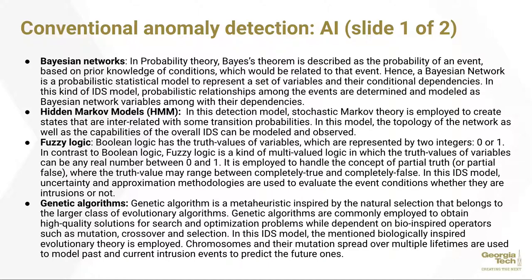Fuzzy logic is employed to handle the concept of partial truth or partial falsity, where the truth value may range between completely true and completely false. This helps with uncertainty and approximation to evaluate event conditions as either intrusions or not. Genetic algorithms are a meta-heuristic inspired by natural selection — Darwinian natural selection — that belongs to a larger class of evolutionary algorithms, commonly employed to obtain high-quality solutions for search and optimization problems.